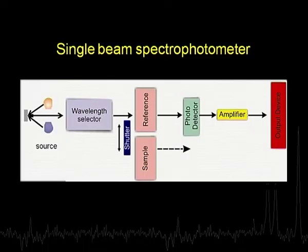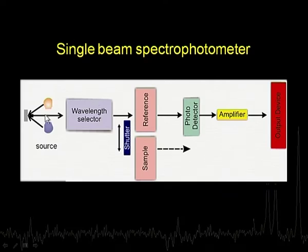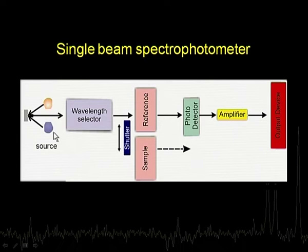The first is the single beam spectrophotometer. You have a source - since we are talking about a UV visible spectrophotometer we need two sources, because a single source cannot give radiation right from 200 to 800 nanometers. So we use a deuterium lamp which gives radiation from 200 to 400 nanometers, and a tungsten lamp which gives radiation from 400 to 800 nanometers. Depending on which region we want to use, we select the appropriate source, and there is provision for switching between the two sources.